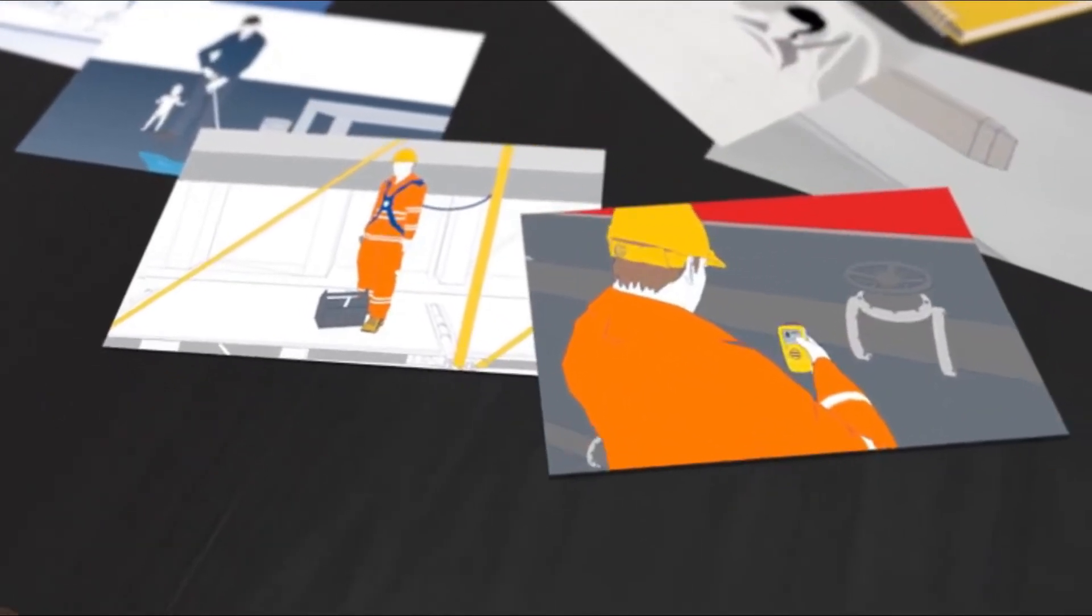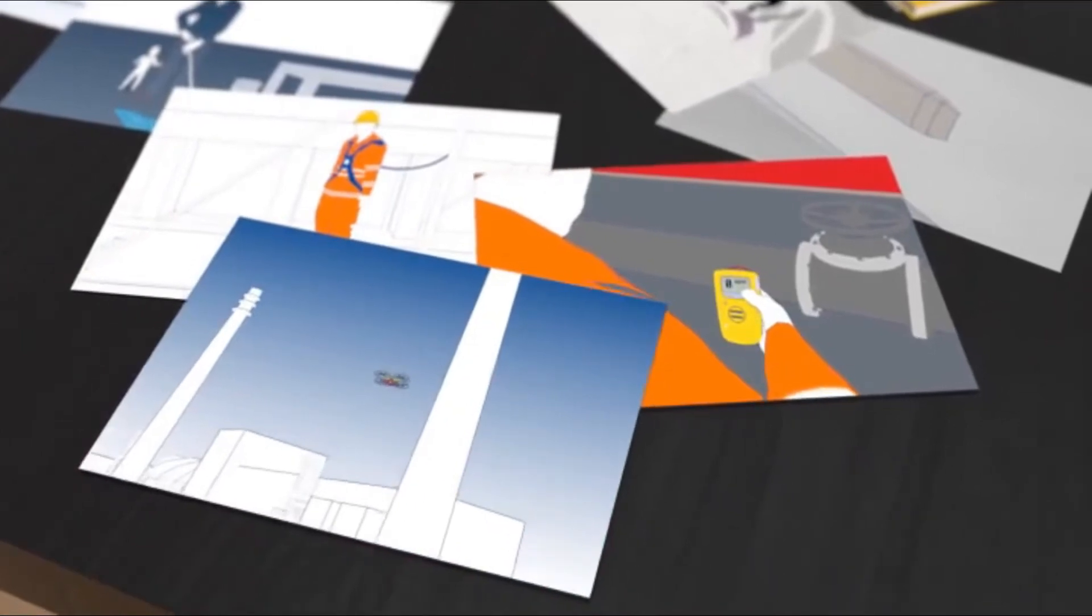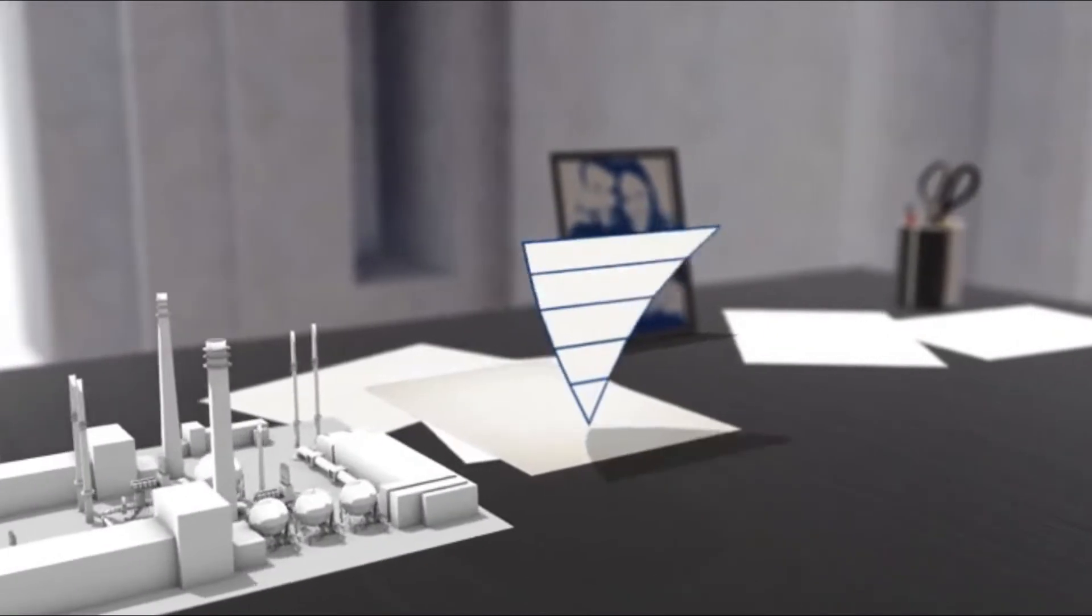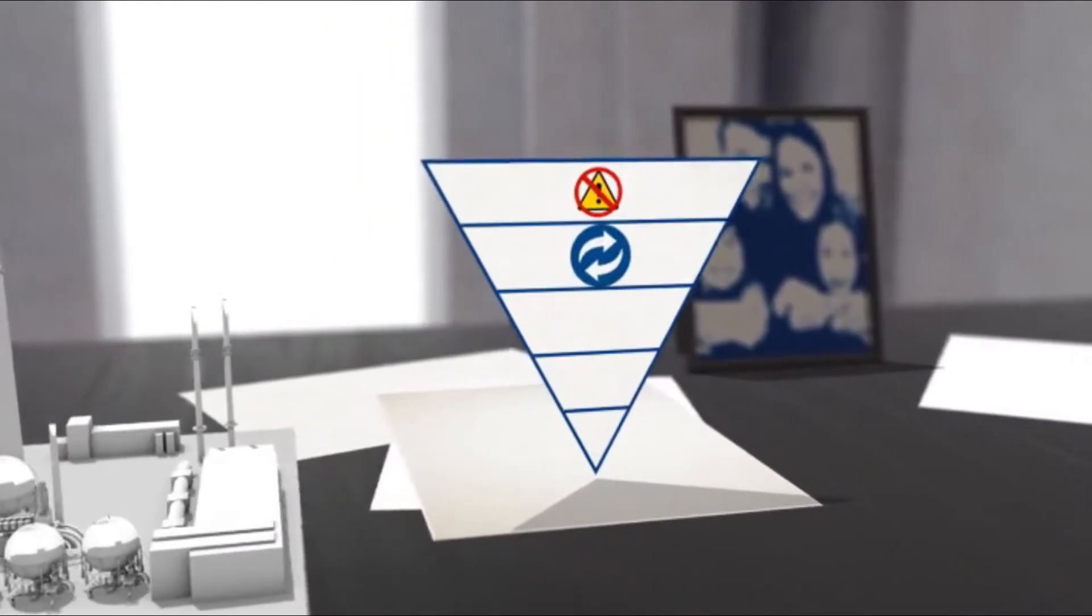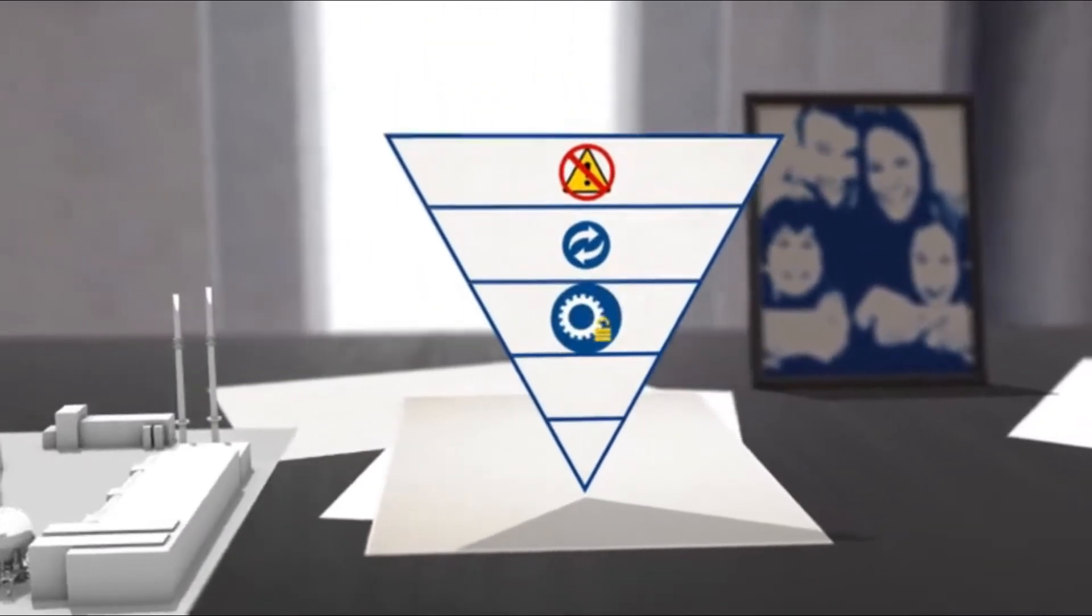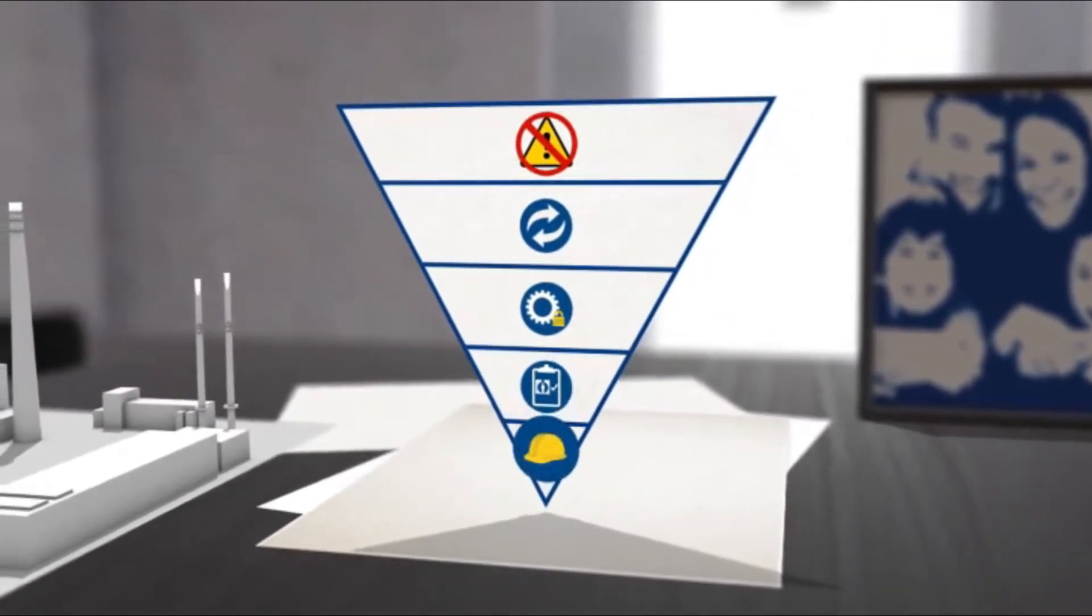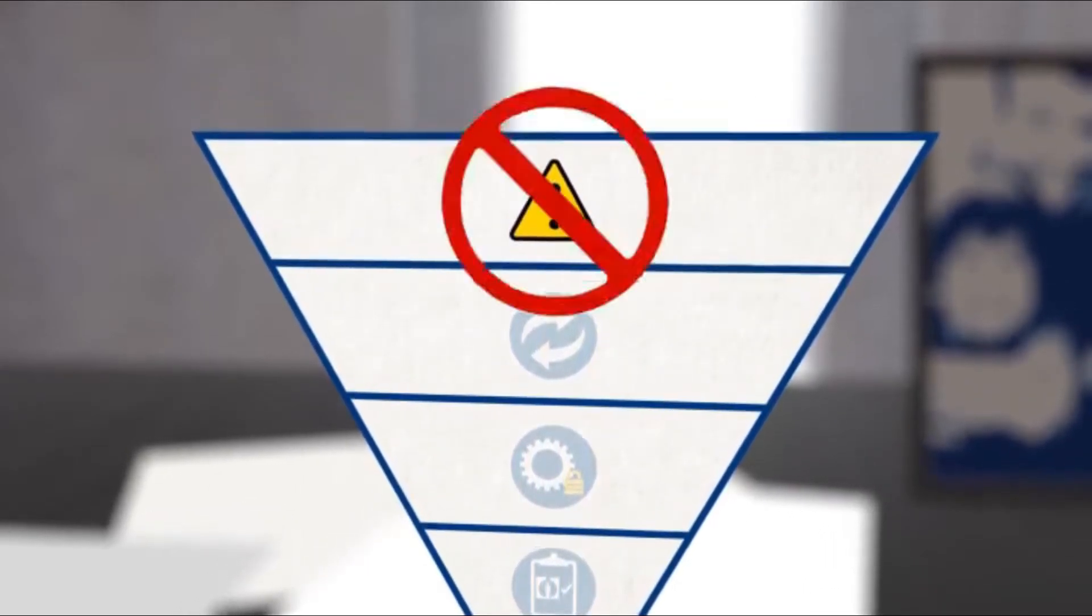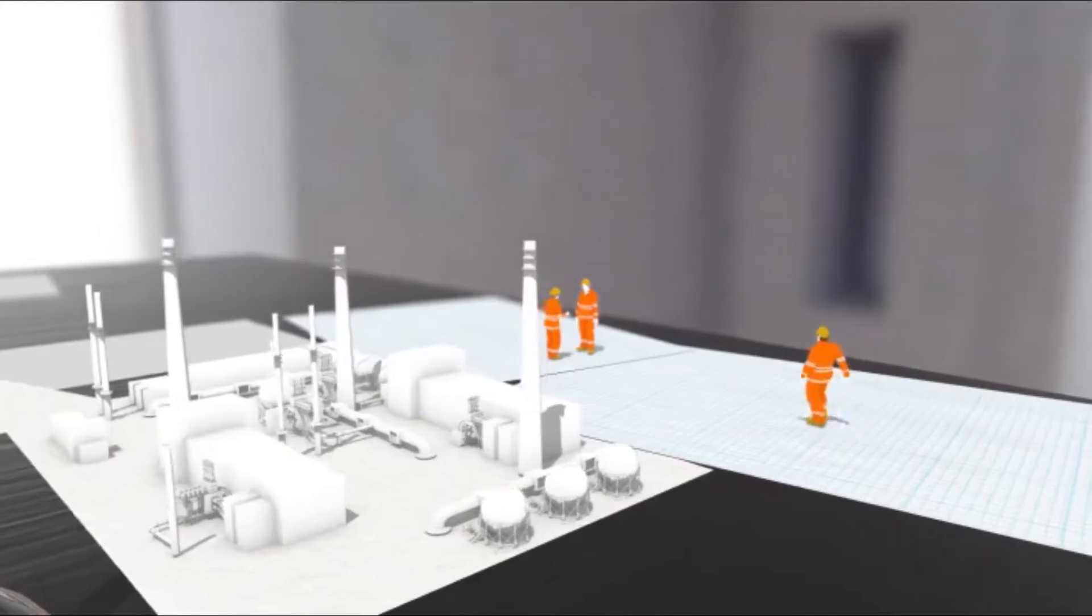Work out how to prevent them, and best of all, remove them altogether. You can use something called the hierarchy of control to help you do just that. It helps you to think about the choices you can make to deal with all kinds of hazards in a step-by-step way. And the best thing is, it's simple to use. It has five levels. At the top is the most effective way of reducing risk: removing the hazard completely.